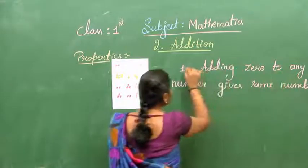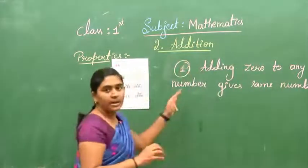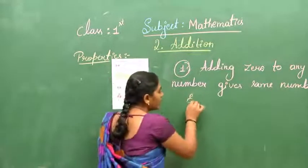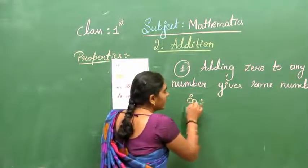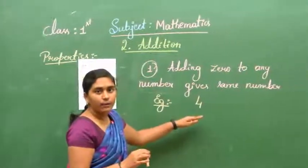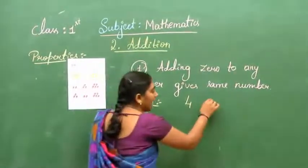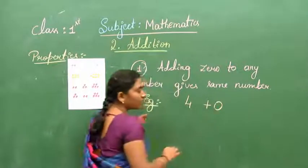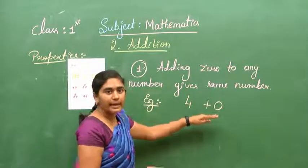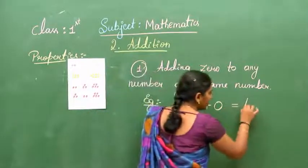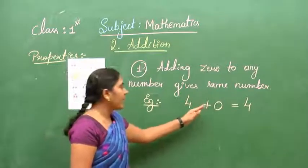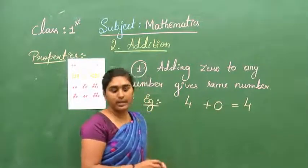This is the first property: adding zero to any number gives the same number. Even you can take any number like 4. There are 4 objects. If you add zero to that, what we get? 4 plus 0. It is 4 only. Any number, if you add zero, you get that number itself.